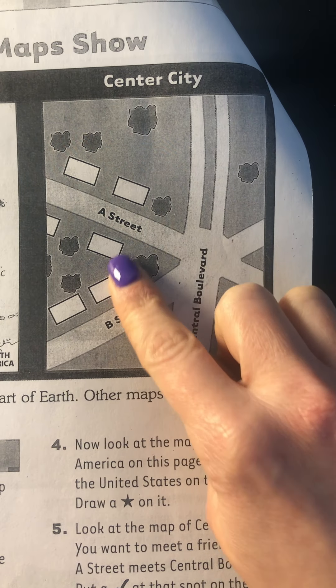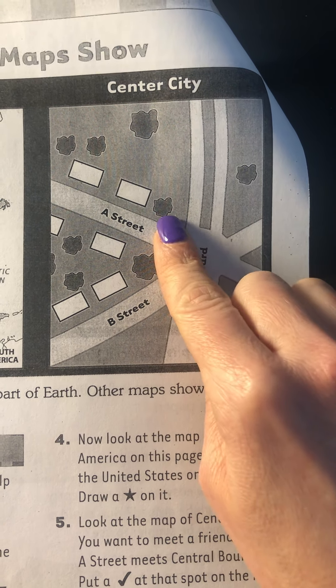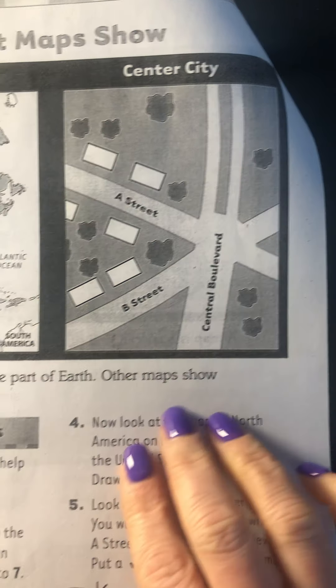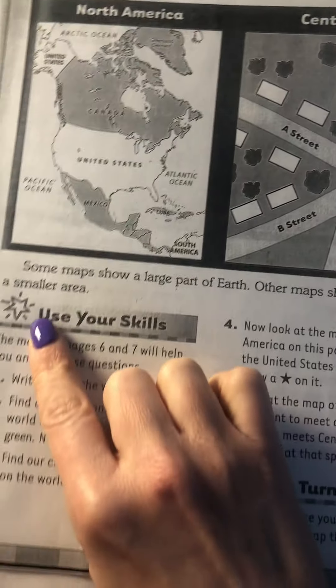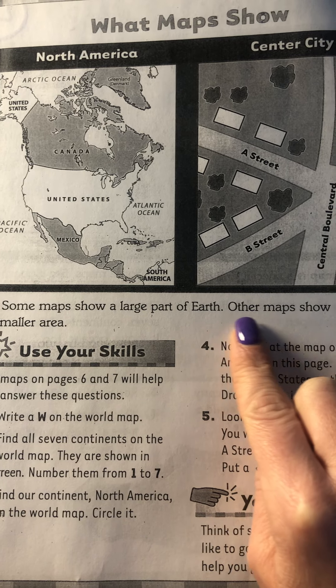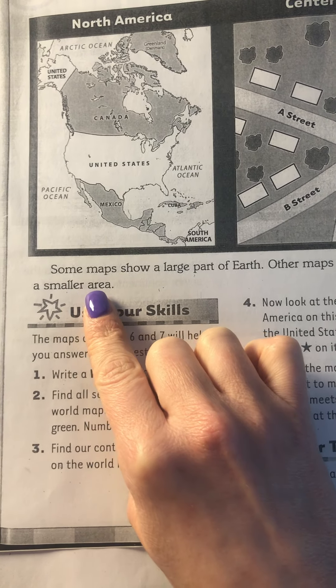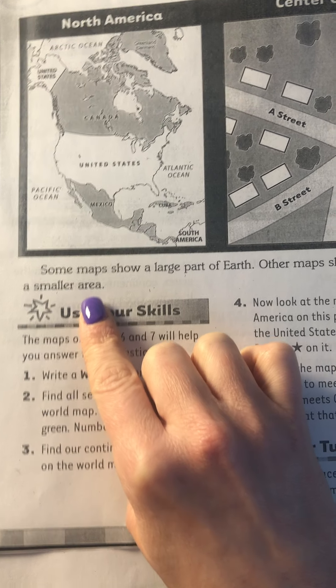And these are the buildings. These are the trees. Some maps show a large part of Earth. Other maps show a smaller area.